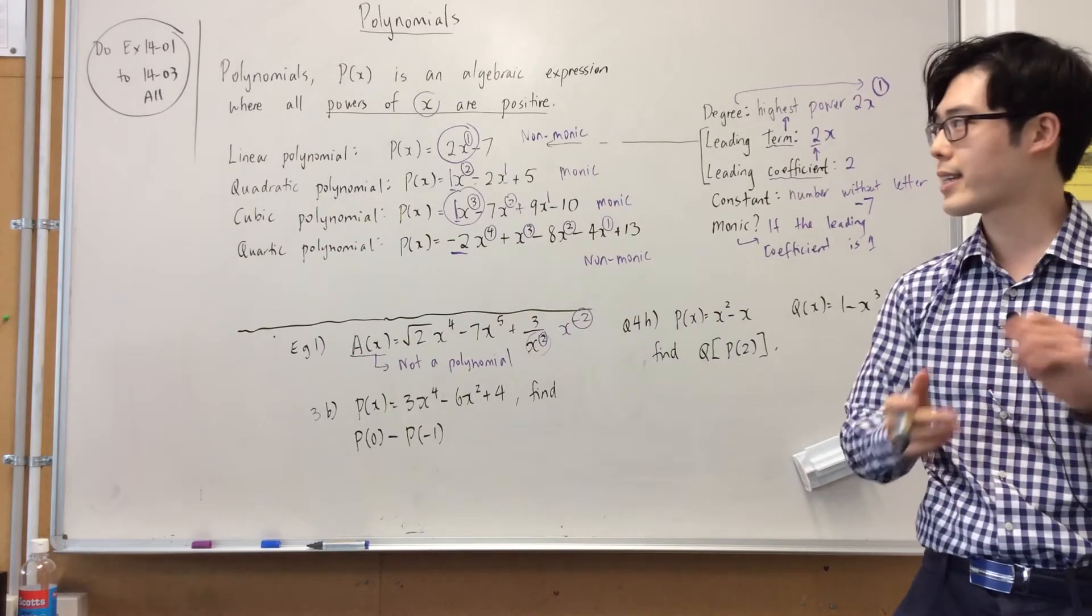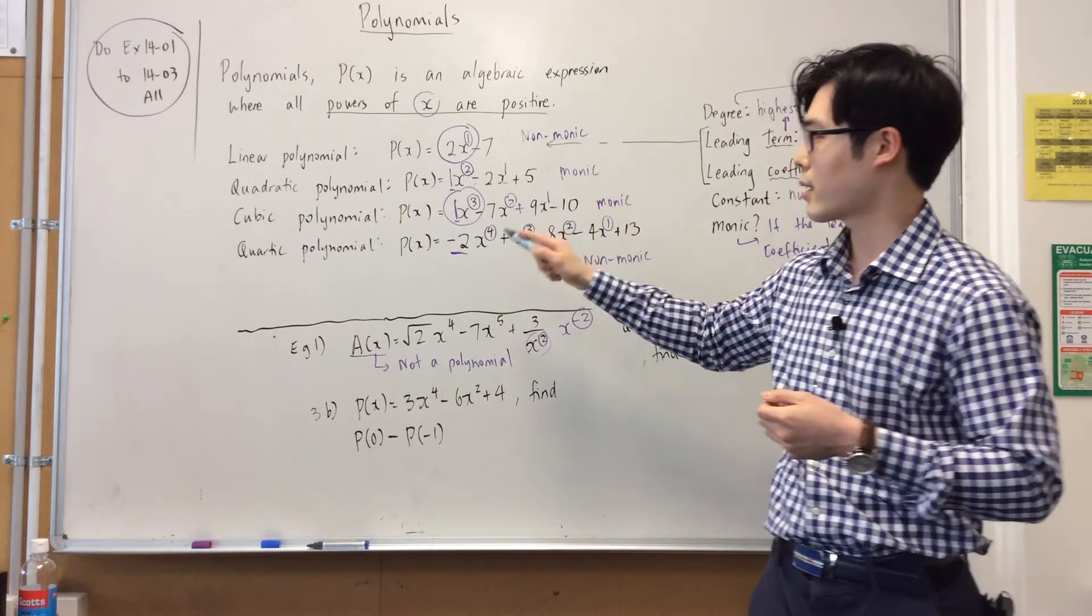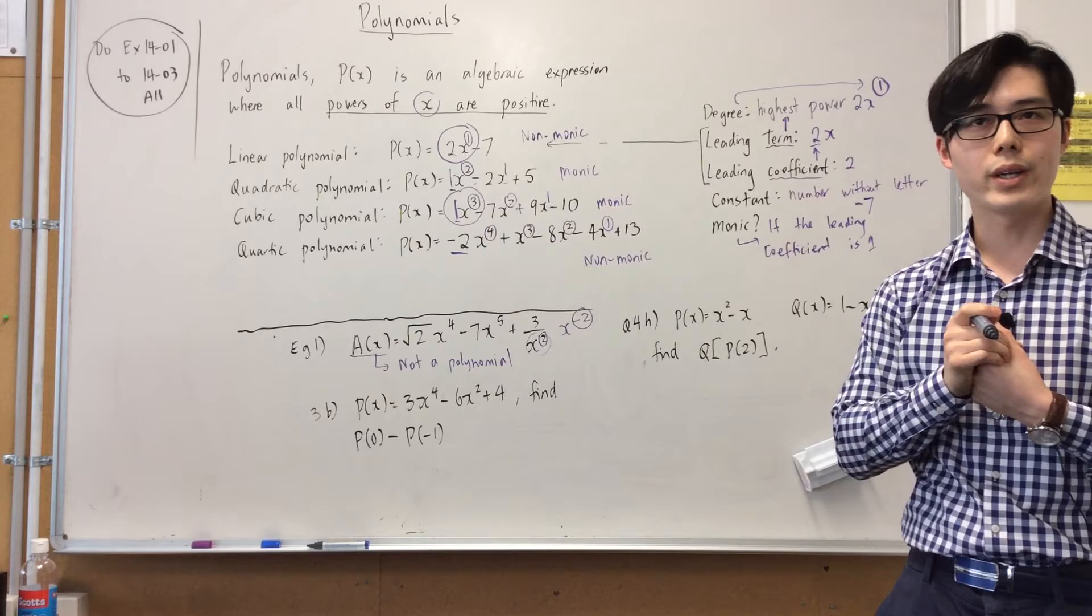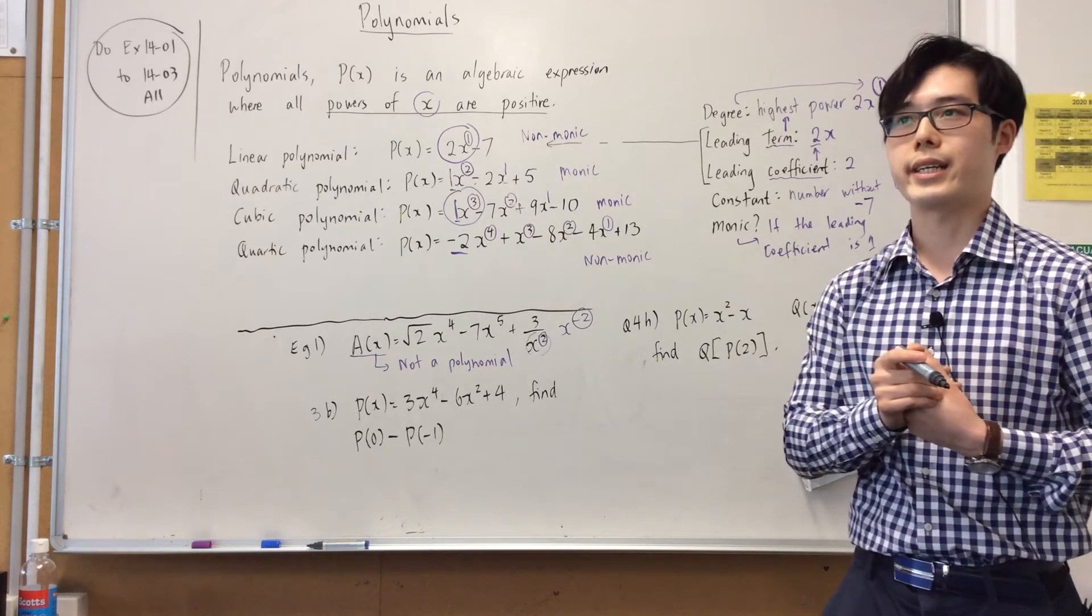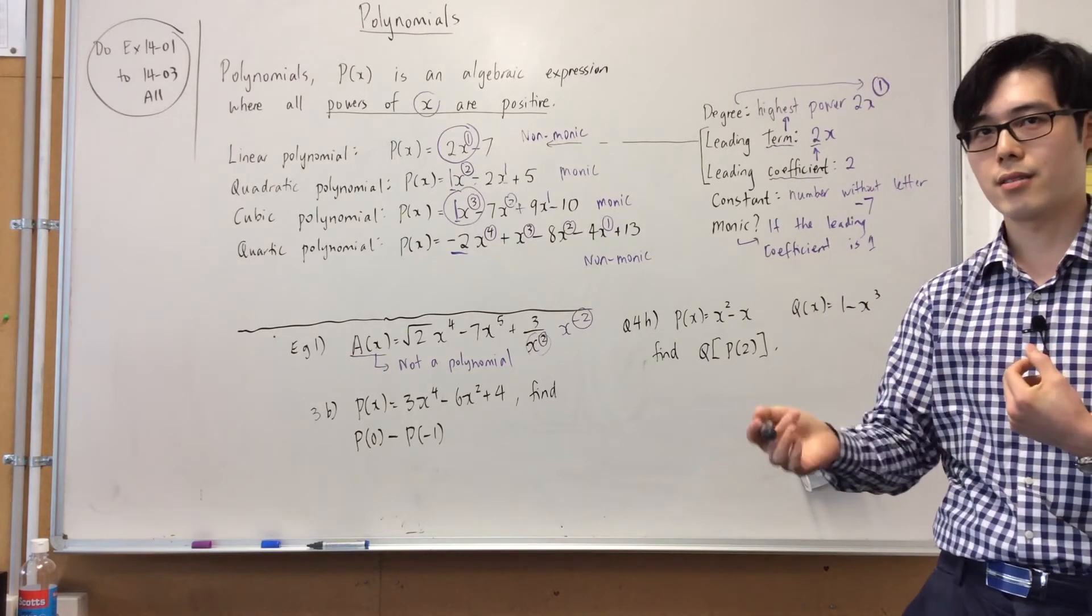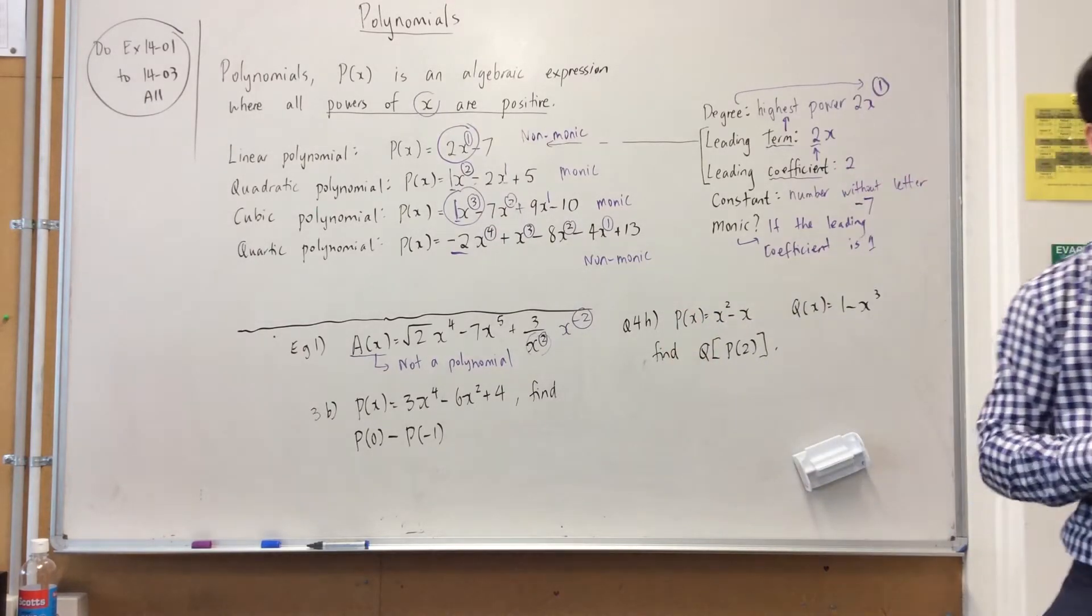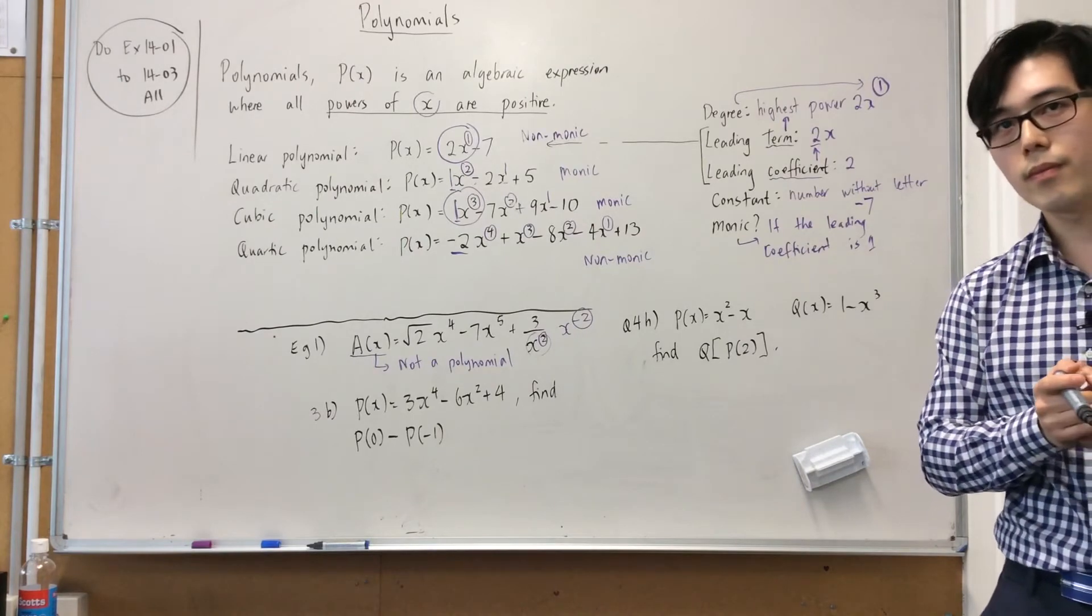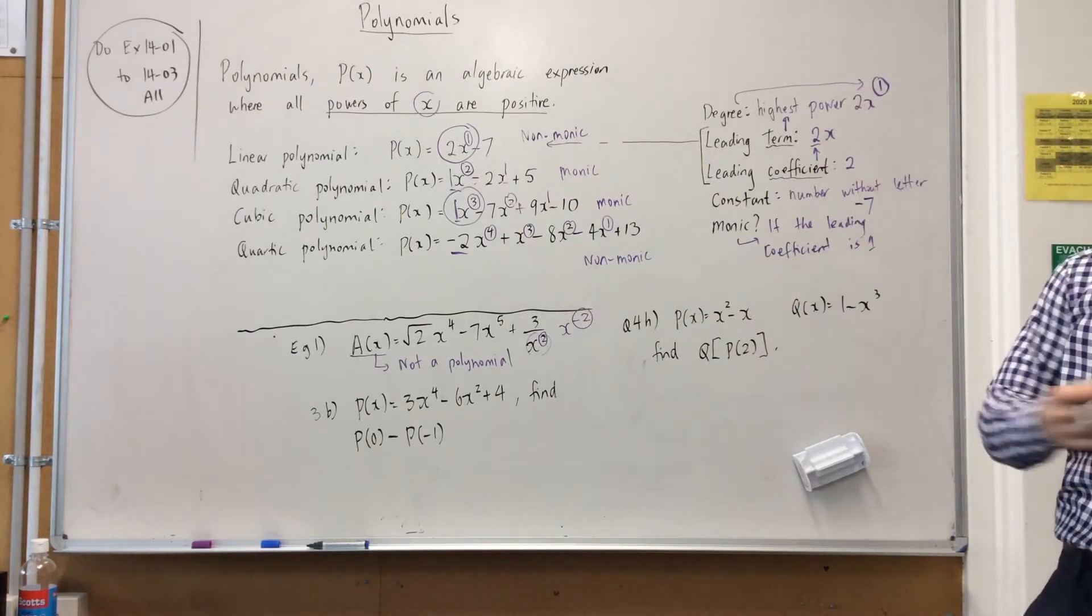Let's get our heads straight once more. Girls, from the fourth one, what's the leading coefficient? From the fourth one. Leading coefficient, minus two. What's the degree? Four. Four. What's the constant? Thirteen. Plus thirteen. Do you have to say plus thirteen? Yes. You can't just say thirteen. Oh, you can, unless it's a minus. What is the leading term? Minus two. Minus two x to the power of four. Okay? So, you need to know those words.